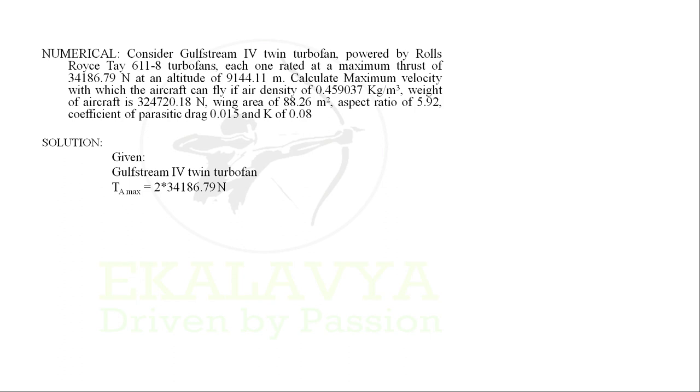The first step to solve any problem is to extract the given data. From the question, we can identify the aircraft as the Gulfstream 4 twin turbofan. The maximum thrust per engine is 34186.79 N; since there are two engines, the total maximum thrust available is 2 × 34186.79 N. The altitude is 9144.11 m, and the air density is given as ρ∞ = 0.459037 kg/m³.